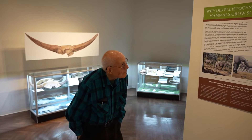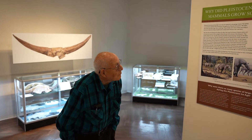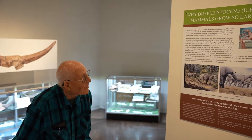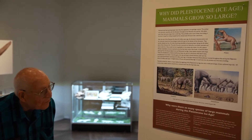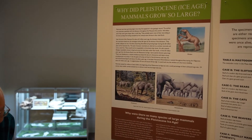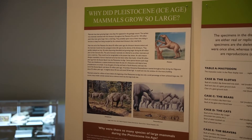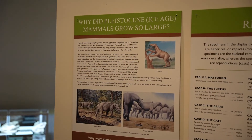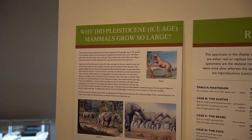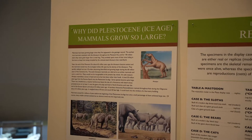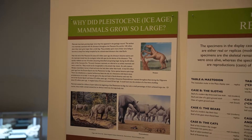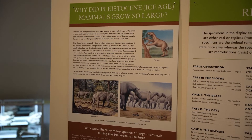On this plaque we have: why did Pleistocene Ice Age mammals grow so large? I'll give a little background on the Pleistocene — the so-called Great Ice Ages. They began about 2.6 million years ago.